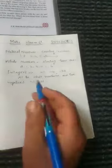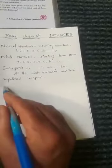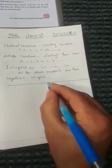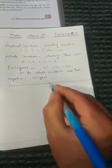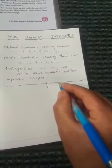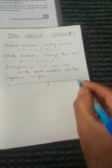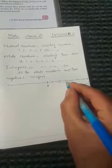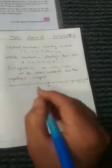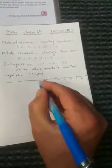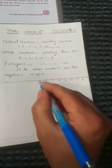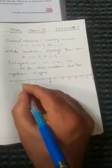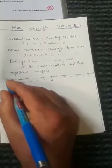Now we have a number line. Here in the middle, we put zero. On the right side, at equal distances, we have 1, 2, 3, 4, 5, 6, and so on - these never end. On the left side or back side, at equal distances, we have minus 1, minus 2, minus 3, minus 4, minus 5, and so on.